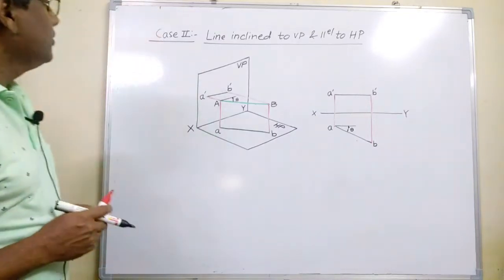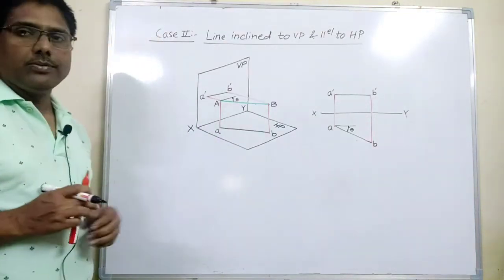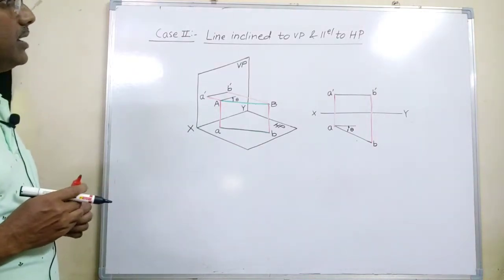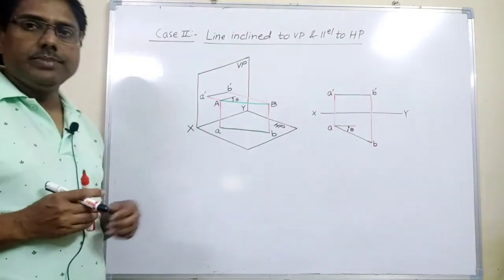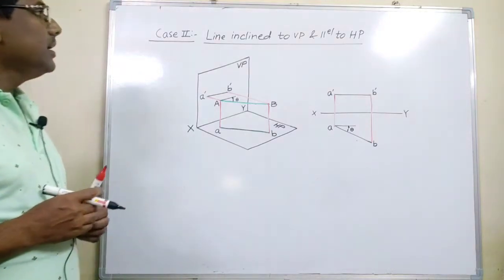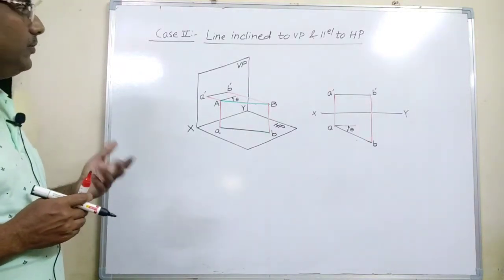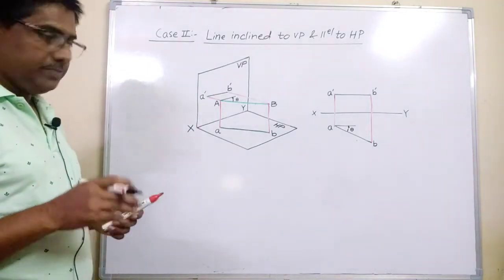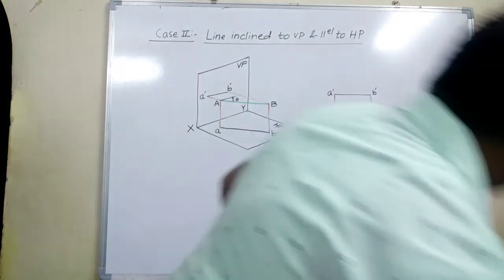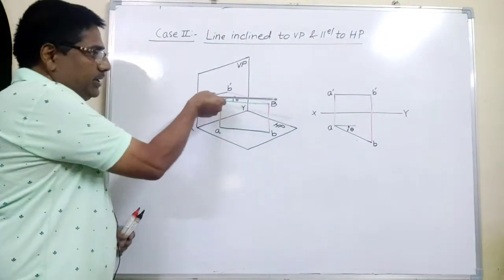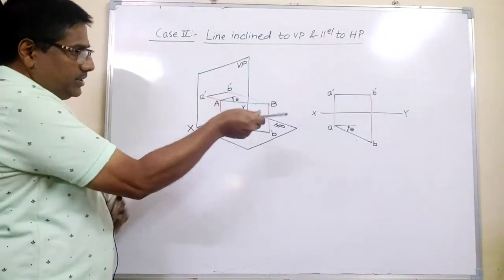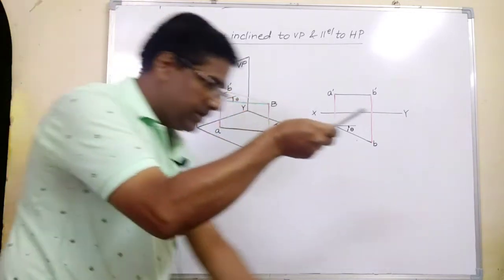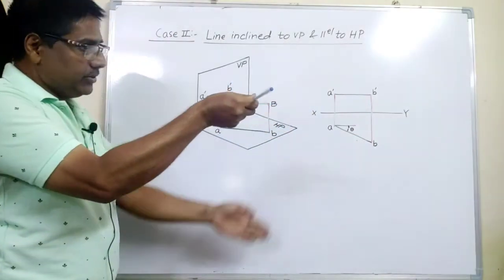Hello everyone. In this video we will learn Case 2 of projection of a straight line. This case is a line inclined to VP and parallel to HP. In the previous video we saw a line inclined to HP and parallel to VP — this is the opposite of that. This line is inclined to VP because it is making a certain angle with the vertical plane.